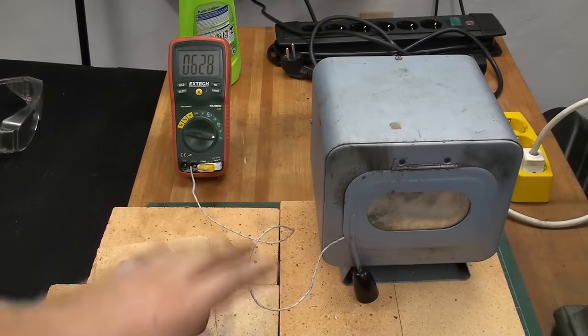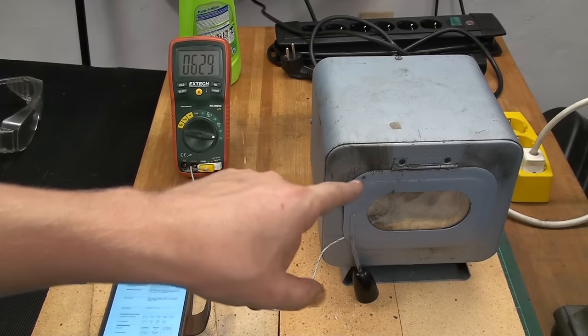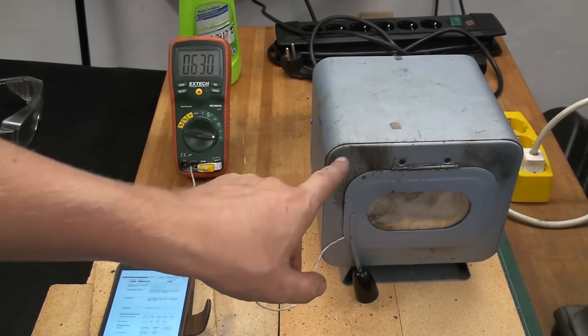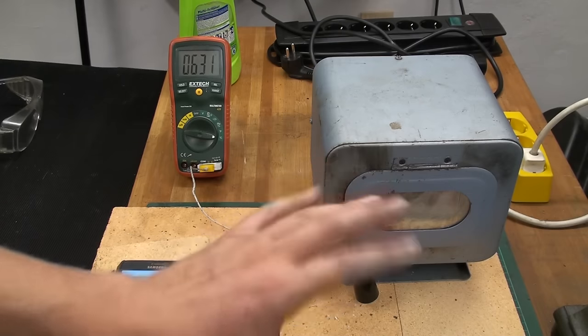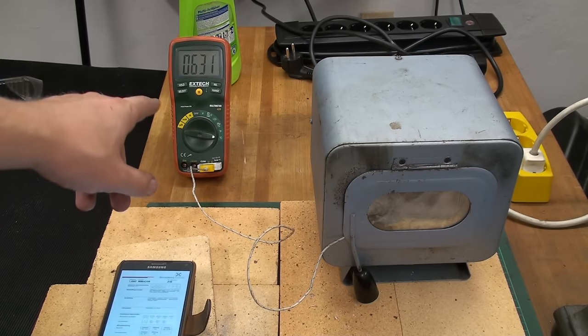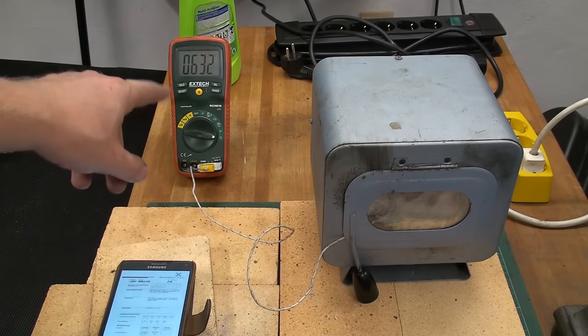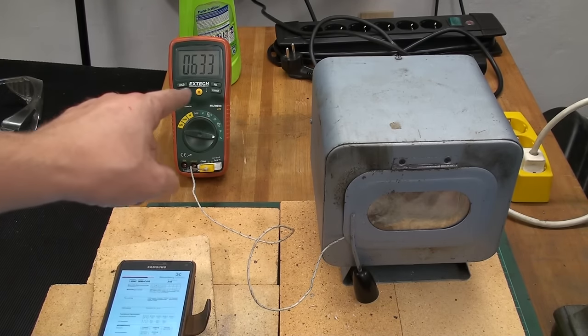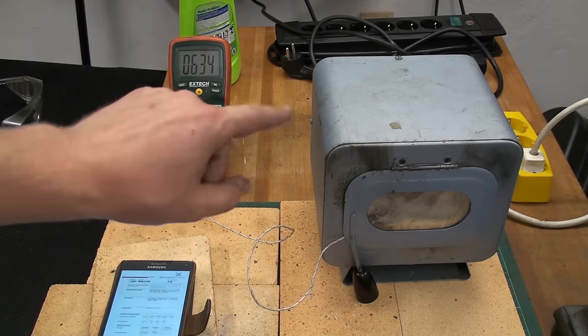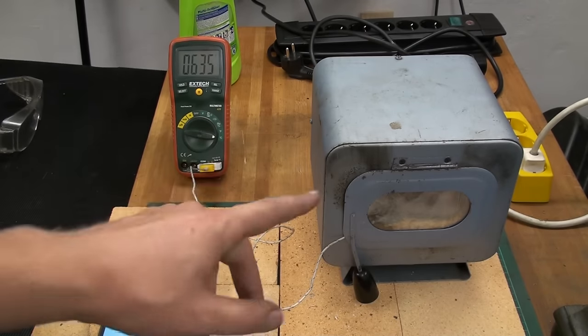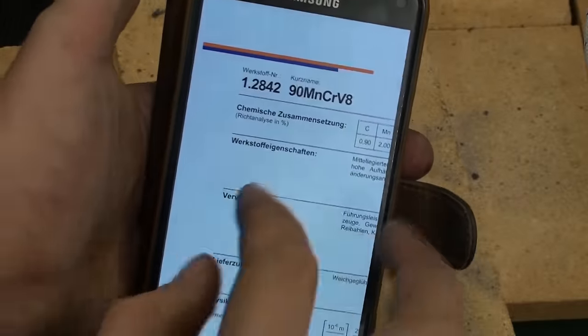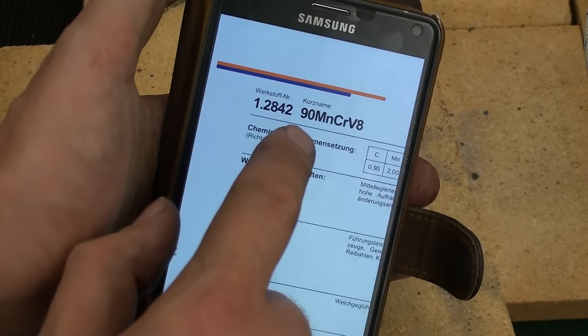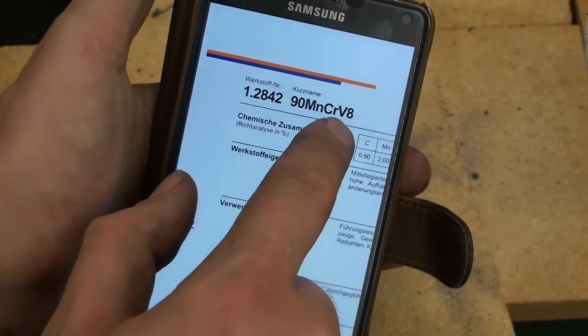I have my little hardening setup here. I have my little EFCO 110 pottery oven that goes up to 1000 degrees C, my multimeter with a temperature probe. We are right now at 634 degrees C, but we need to go further for hardening. What I have here is the data sheet for the steel we are using. It's 1.2842, 90 manganese chrome vanadium 8.